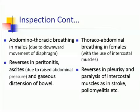Regarding breathing patterns, abdominal-thoracic breathing in males is due to the downward movement of the diaphragm, and reverses in peritonitis or ascites due to raised abdominal pressure and gaseous distension of the bowel. Thoraco-abdominal breathing occurs in females with the use of intercostal muscles, and reverses in pleurisy and paralysis of intercostal muscles as in stroke and poliomyelitis.